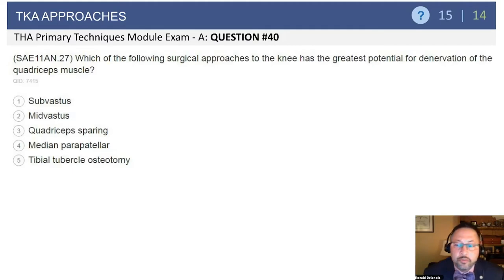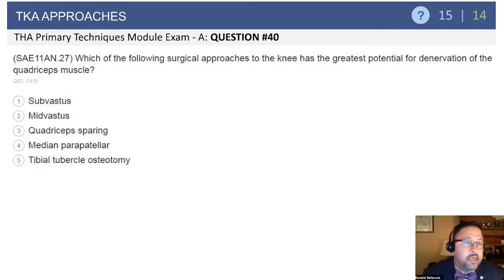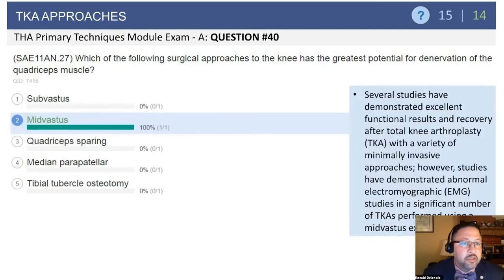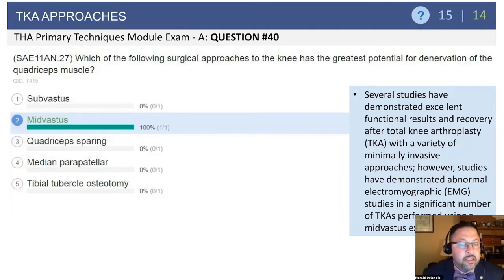Here's a question: which surgical approach to the knee has the greatest potential for denervation of the quad muscle? Only one of the answers actually violates the quadriceps mechanism, and that's the mid-vastus — and that's the answer. Several studies have shown that the mid-vastus approach can result in denervation of the VMO. Its long-term consequences are debatable, but it has definitely been shown via EMG.